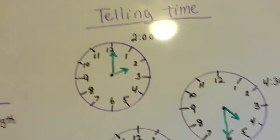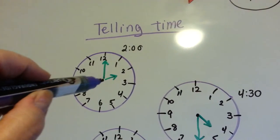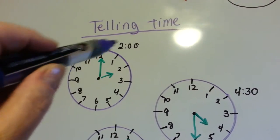So, for telling time, you want to make sure that you understand that when the little hand is on the 2 and the big hand is on the 12, that's 2 o'clock.